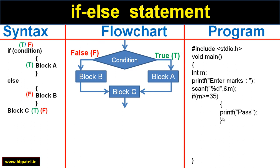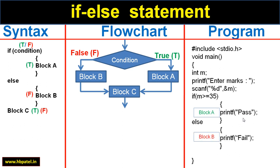If the condition is true, it will go into the body of the if statement — which is block A. If it is false, it will skip block A and jump to block B. In both cases, either after block A or block B, it will come to block C. Over here in block C we have written 'bye'.